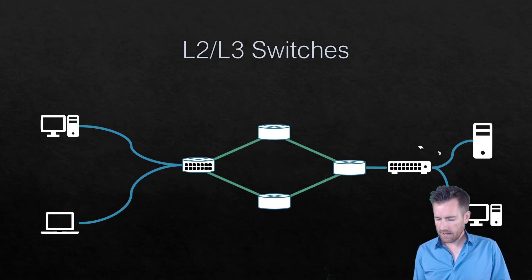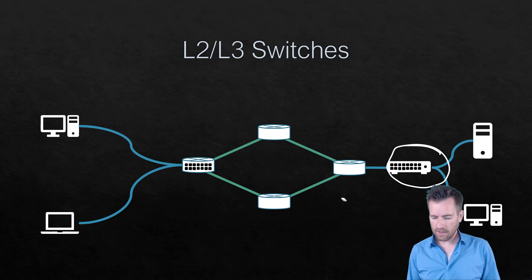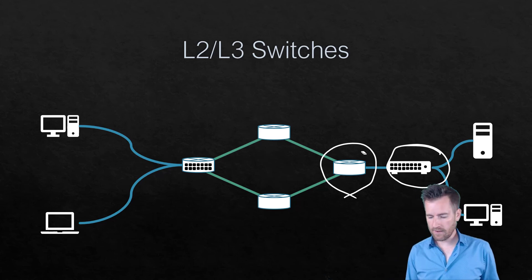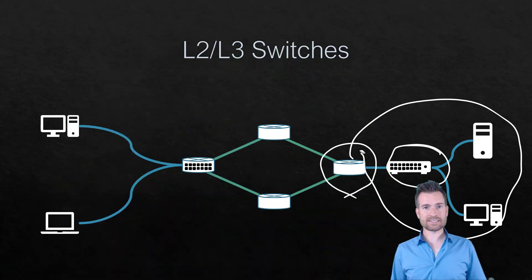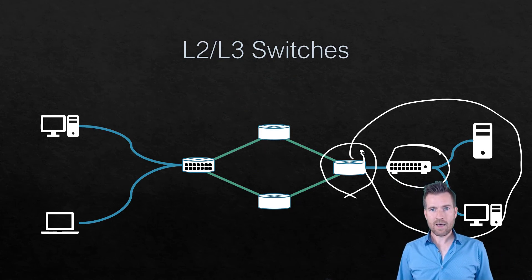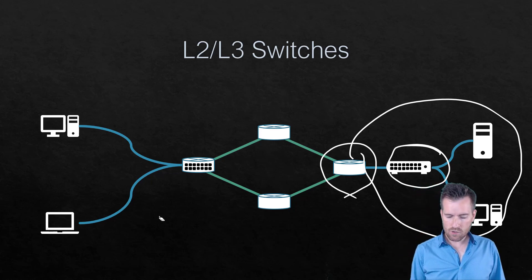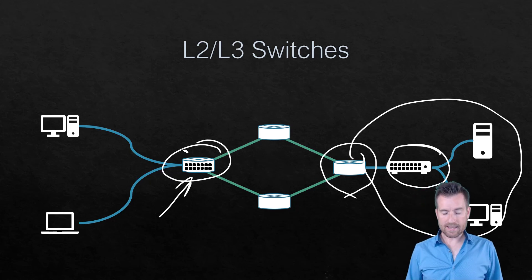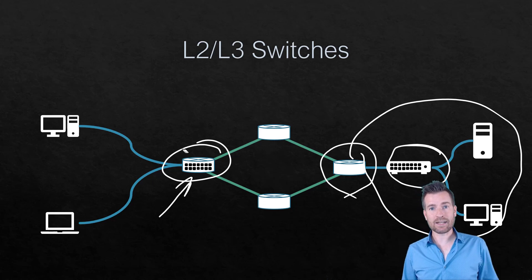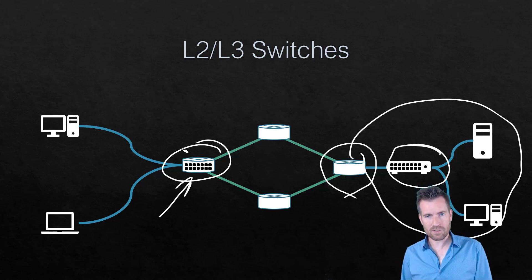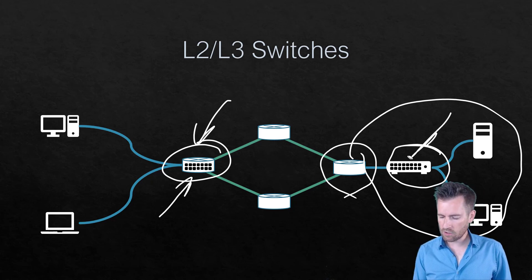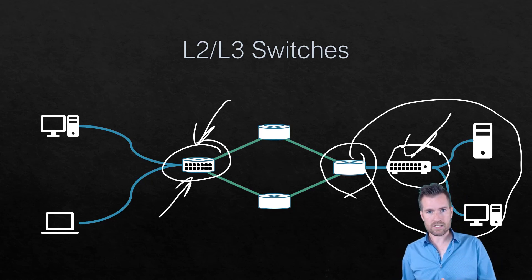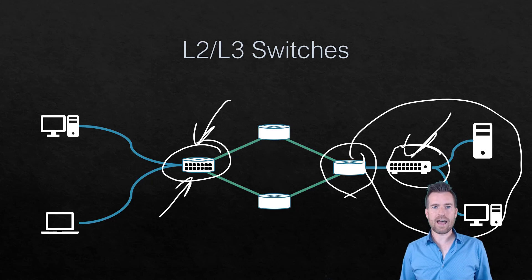Businesses will typically have a switch connecting all their end devices, then a router to route that information and divide their network from other networks. Another thing common in businesses is a layer three switch. A layer three switch connects all your end devices but also has layer three routing functionality built in. A layer two switch is just a standard bridge or switch, whereas a layer three switch has built-in router functionality that you can choose whether to use.